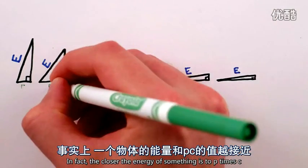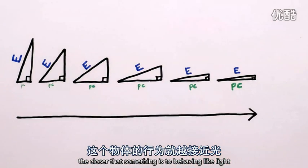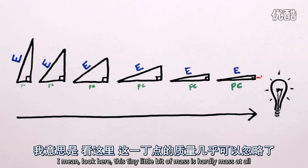In fact, the closer the energy of something is to pc, the closer that something is to behaving like light. I mean, look here, this tiny little bit of mass is hardly mass at all.